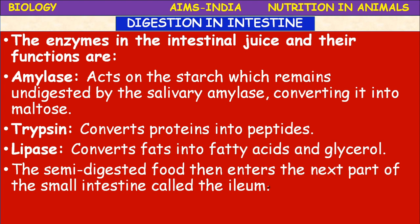The semi-digested food then enters the next part of the small intestine. In the stomach it was called chyme, which is acidic in nature; now it is called chyle, which is somewhat basic in nature because bicarbonate salts present in the pancreatic juice neutralize the action of HCl. This is because enzymes require a specific pH — pepsin requires an acidic medium, while the remaining enzymes require a basic medium.